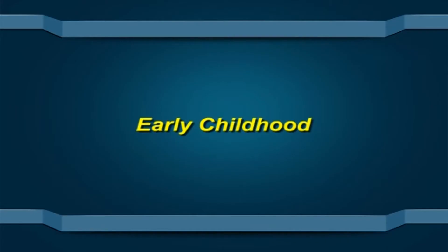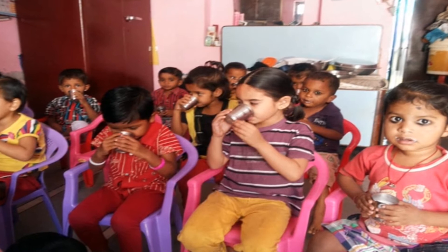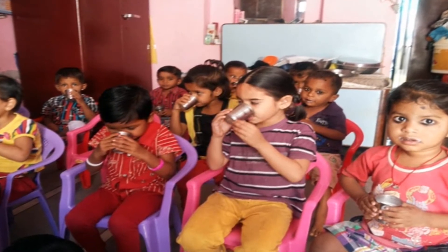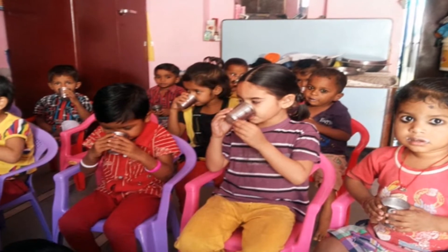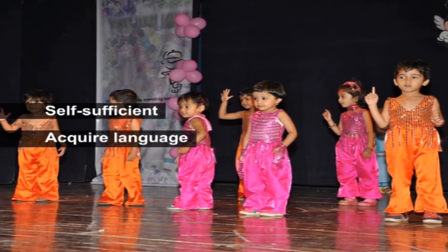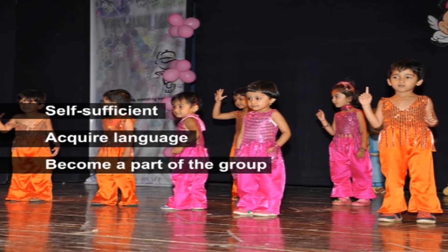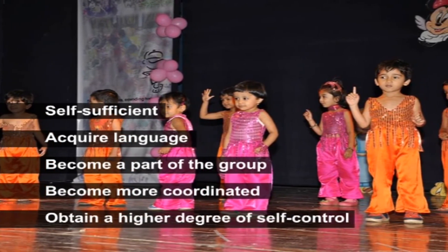Childhood is the period from 3 years to 12 years. The early childhood years, 3 to 6 years of age, represent a remarkable period of physical and psychological development. Children become more self-sufficient, acquire language, become part of a group, become more coordinated and obtain a higher degree of self-control.